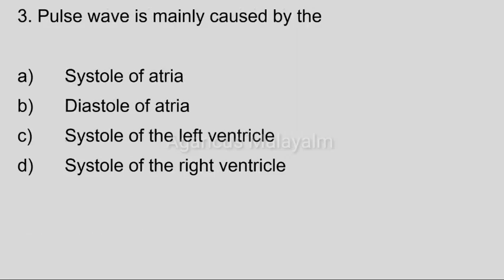Third question: Pulse waves is mainly caused by. Answer options — Option A: Systole of atria. Option B: Diastole of atria. Option C: Systole of the left ventricle. Option D: Systole of the right ventricle. Correct answer: Option C, Systole of the left ventricle.